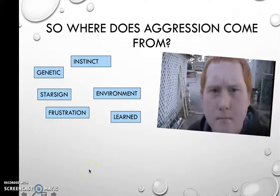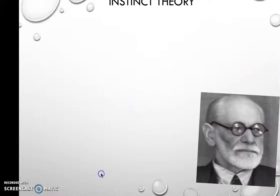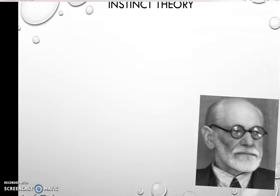What caused that person to be aggressive? That's the point we need to try to work out. Now, there are three theories we need to look at: the instinct theory, the frustration-aggression theory, and the revised frustration-aggression theory. Let's go through those.